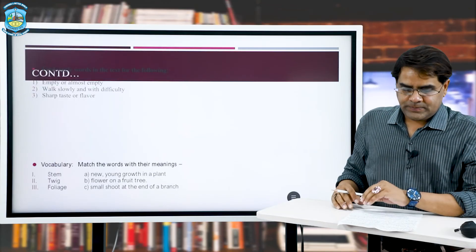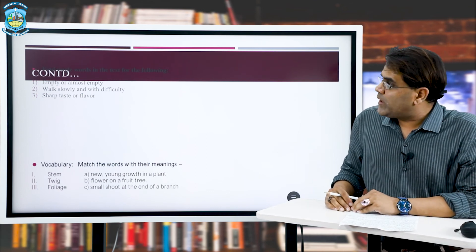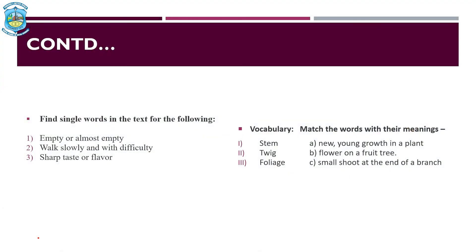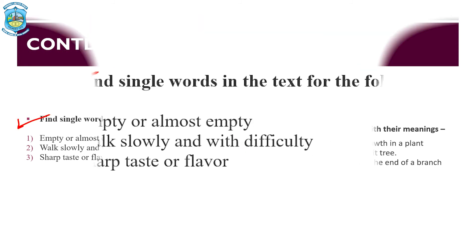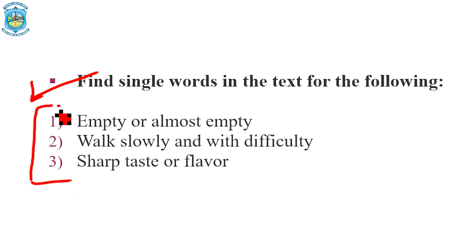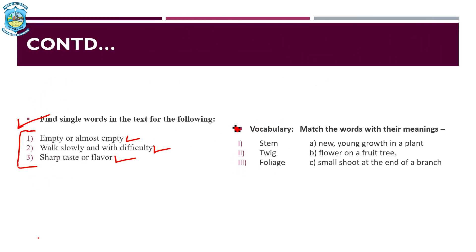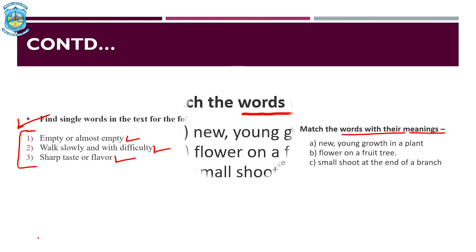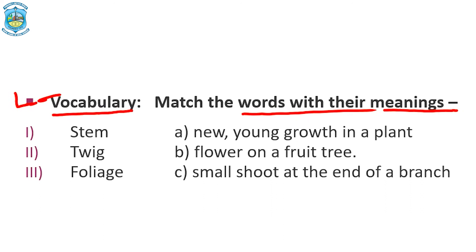We have now reached the end section, looking at other aspects of the exercises. This part talks about how to find single words in the text for the following: first, 'empty or almost empty'; second, 'walk slowly and with difficulty'; and third, 'sharp taste or flavour.' In the section below, we're going to look at vocabulary, where we will be learning to match words exactly with their meanings. We have got three words: stem, twig, and foliage.